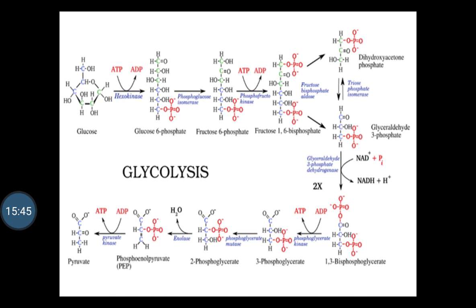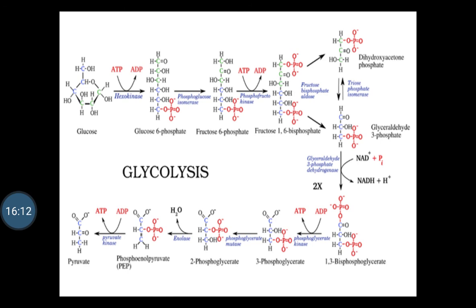Step 8 is the isomerization of 3-phosphoglycerate. The 3-phosphoglycerate is converted into 2-phosphoglycerate due to the shift of the phosphoryl group from C3 to C2 by the enzyme phosphoglycerate mutase. This is a reversible isomerization reaction.